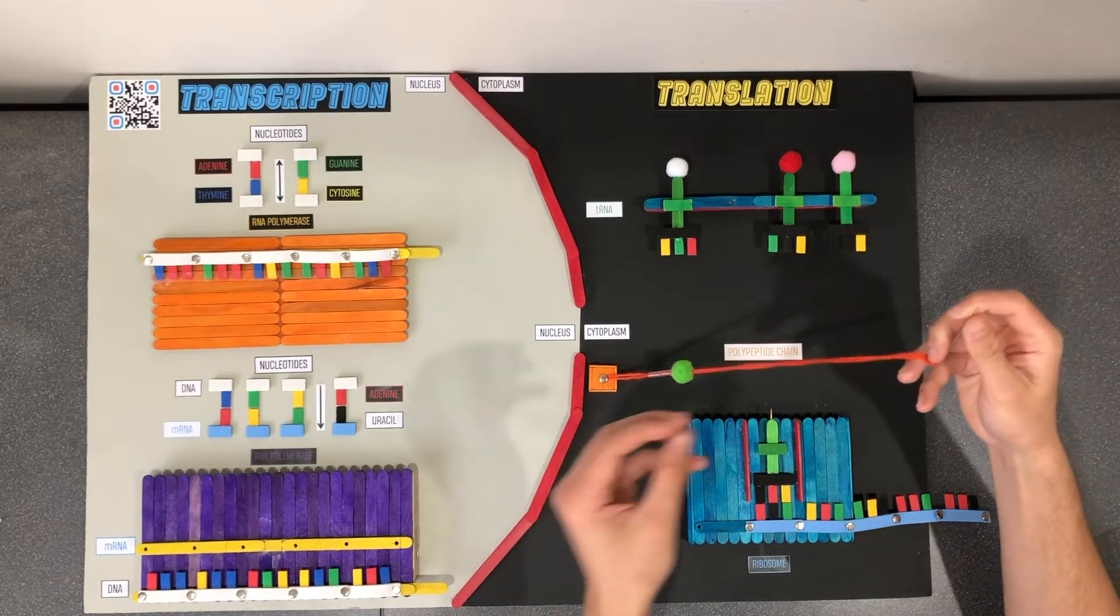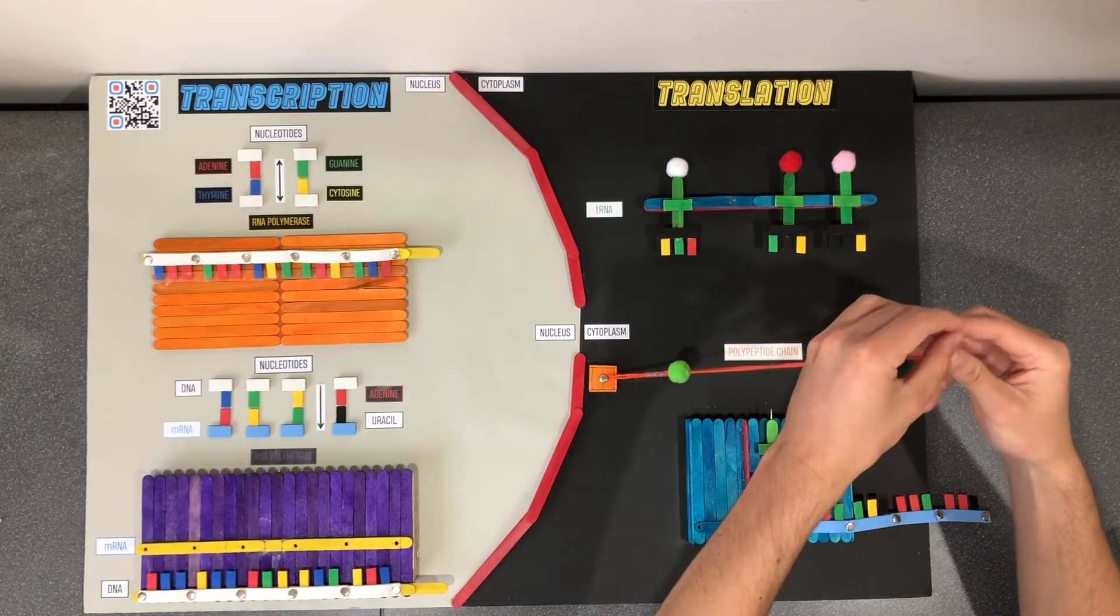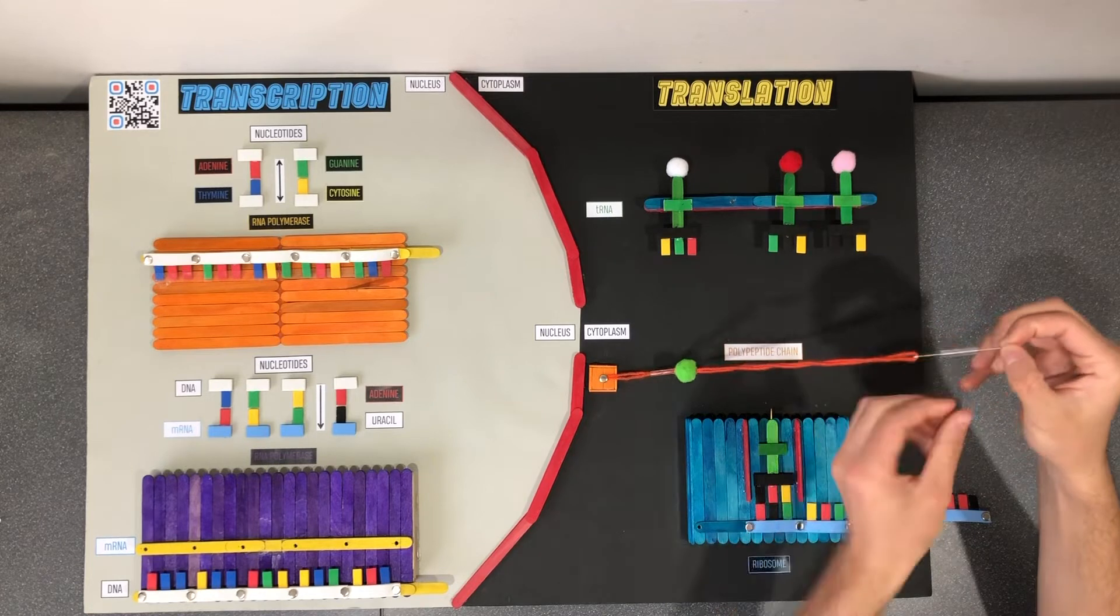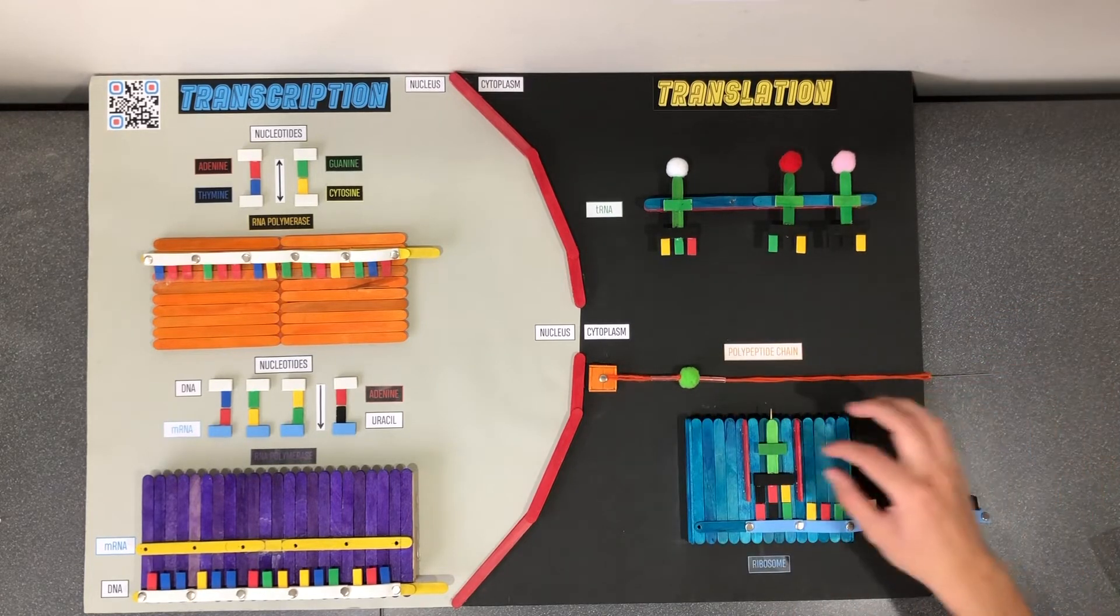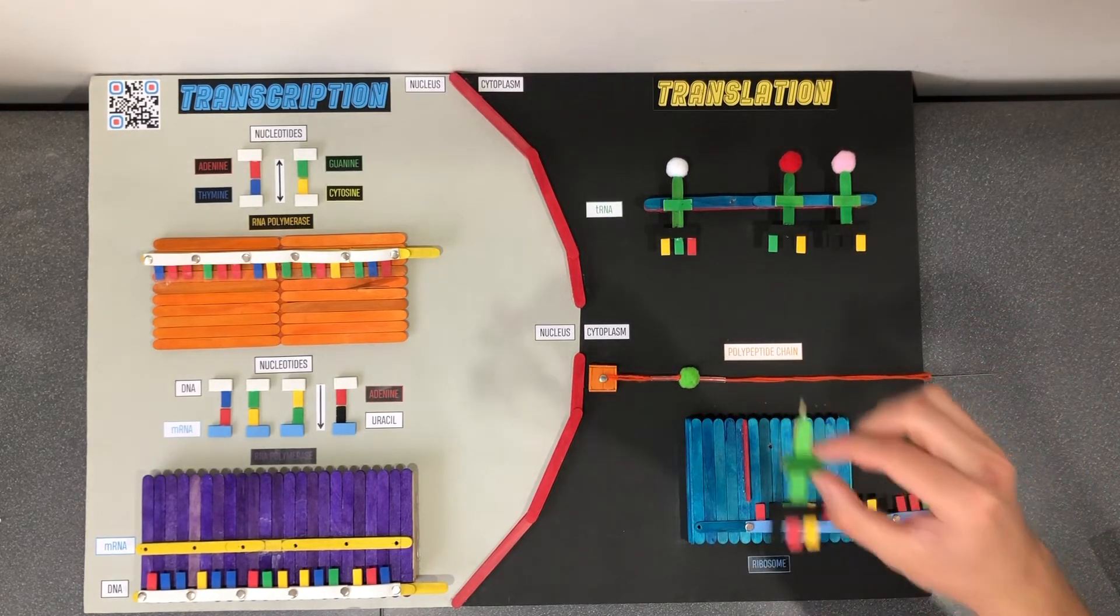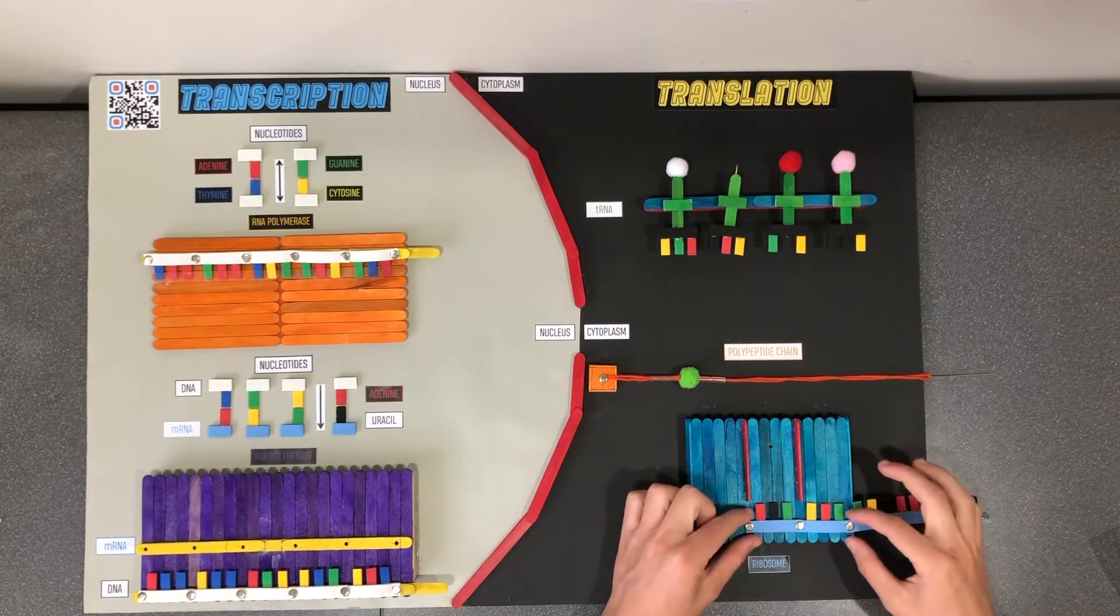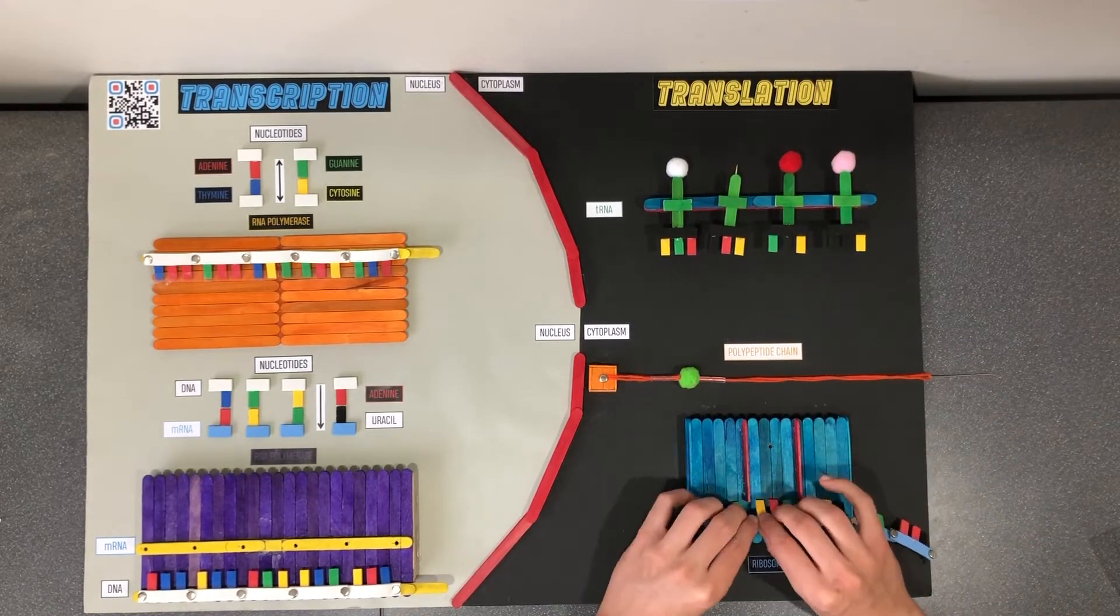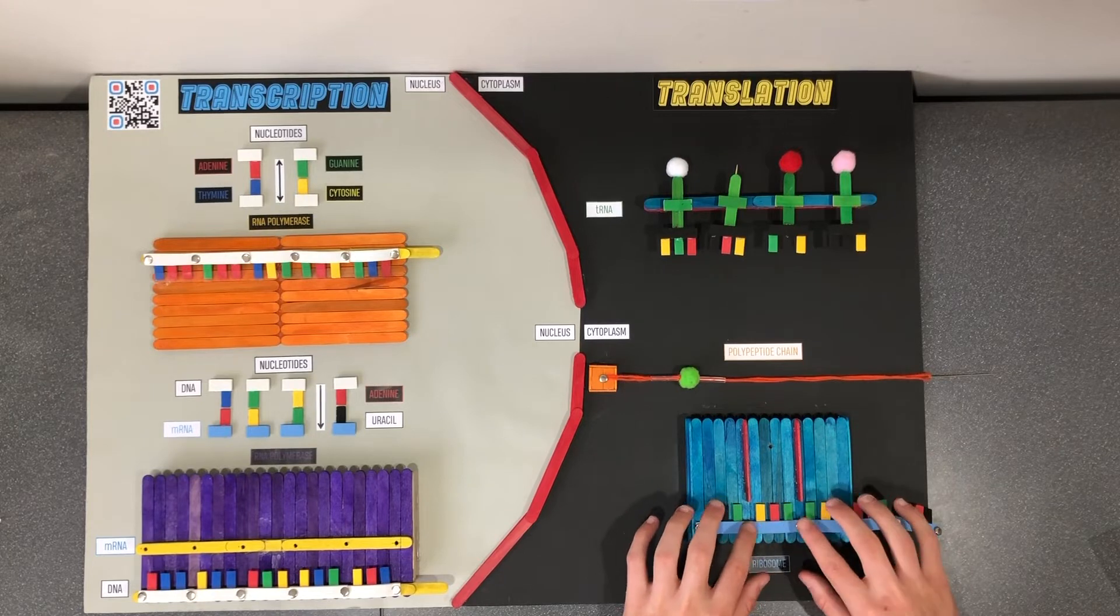The clear spacers will be inserted between amino acids to represent the peptide bonds. The tRNA molecule will be removed, the mRNA strand will shift to the next codon, and the process will continue until the ribosome reaches a stop codon.